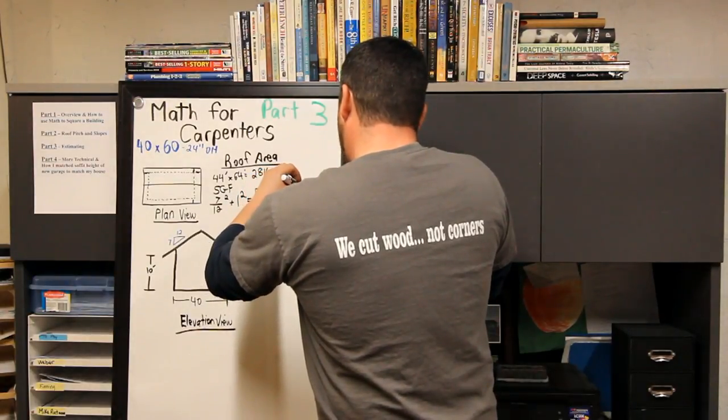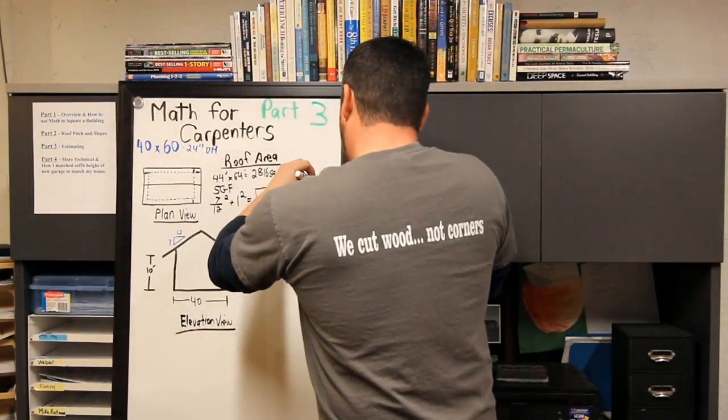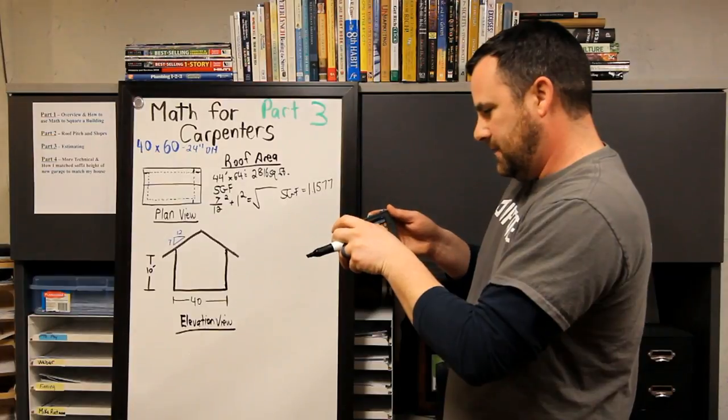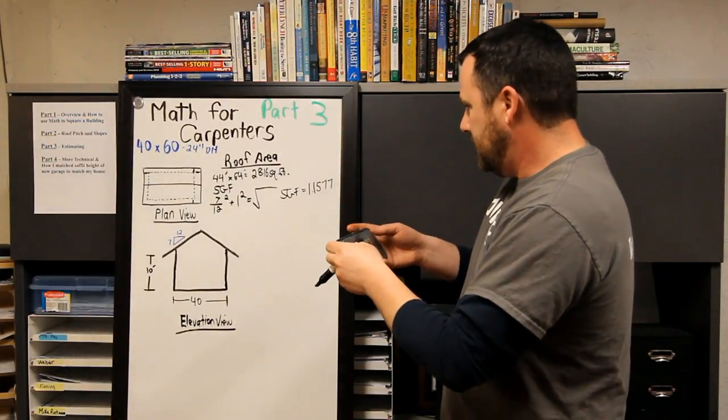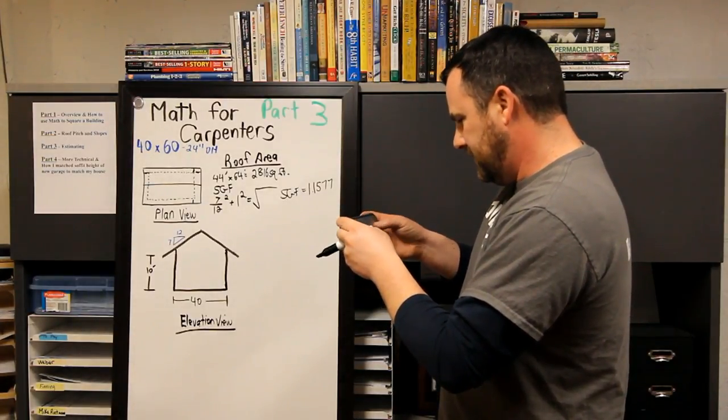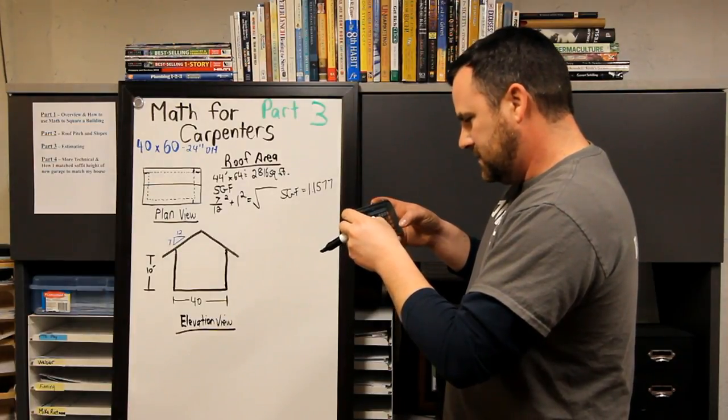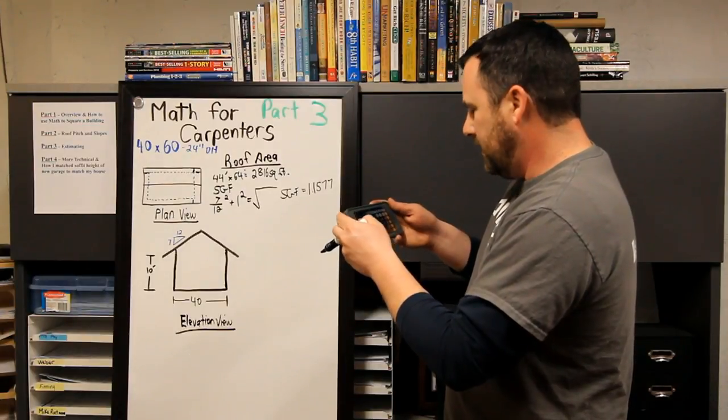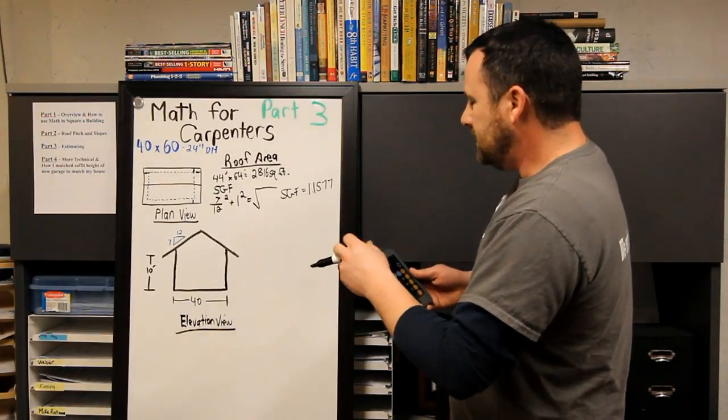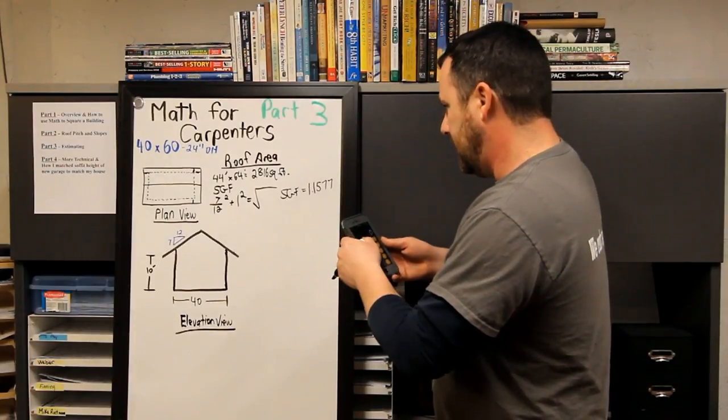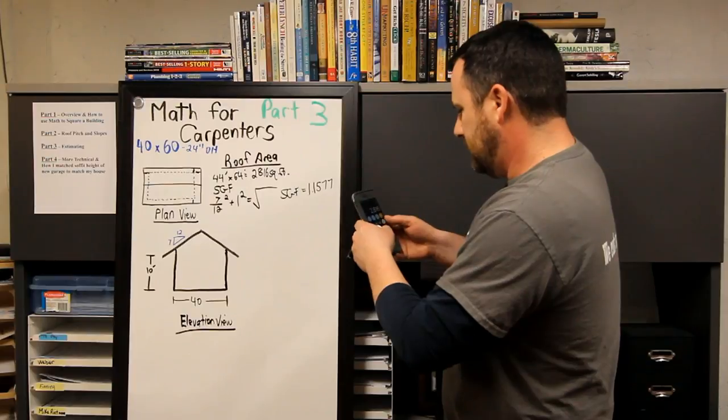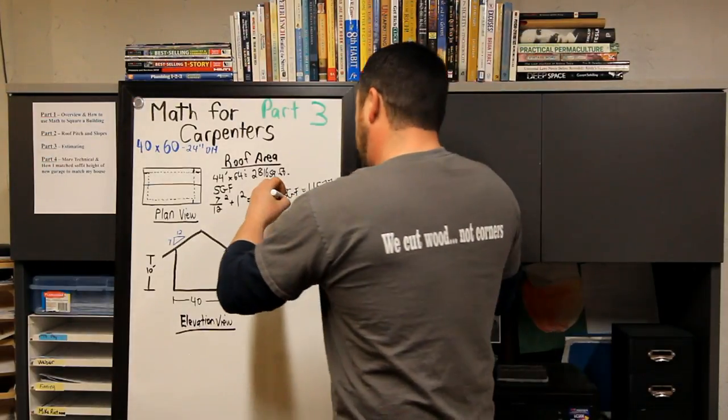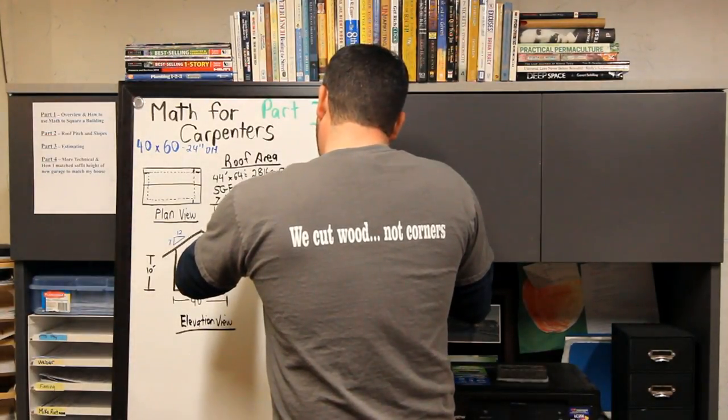Okay, so slope gain factor of a 7/12 is 1.1577. This is what goes on in my head when I estimate. I'm going to double-check: 7 divided by 12 equals, squared, plus 1, equals square root, 1.1577. Let's figure out how many shingles you need or anything like that. You go 2816 square feet times 1.1577 is 3260 square feet actual shingle area.